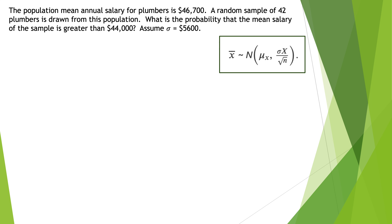Some applications of the Central Limit Theorem for sample means. The population mean annual salary for plumbers is $46,700. A random sample of 42 plumbers is drawn from the population. What's the probability that the sample mean is going to be greater than $44,000? Assume that the standard deviation — that's what the symbol sigma stands for — is $5,600.